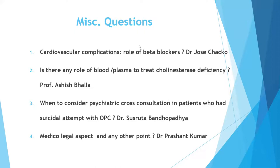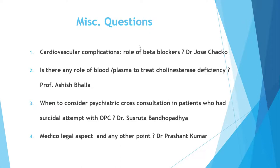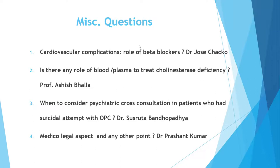On atropine infusion versus intermittent dosing: we use intermittent doses initially, switching to infusion if control is inadequate. A study from Bangladesh by Dr. Faiz showed that the doubling dose with infusion helps and better titrates — you can control side effects of atropine more easily with infusion. We prefer infusion because titration is easier and the overall dose required may be less.